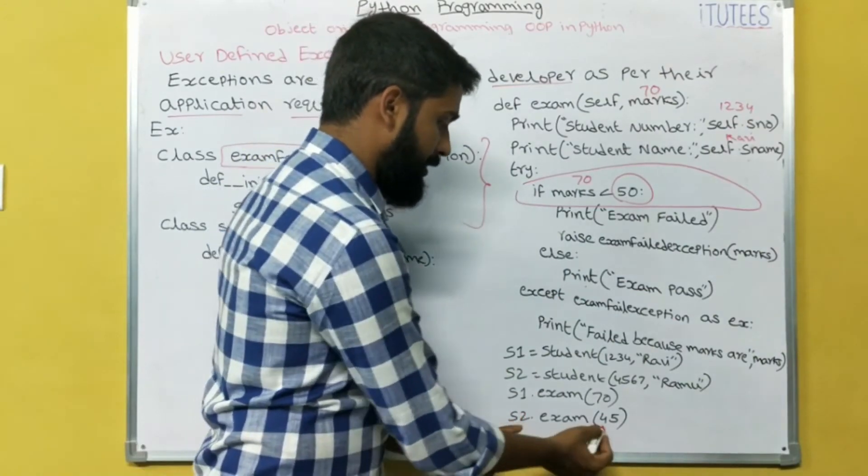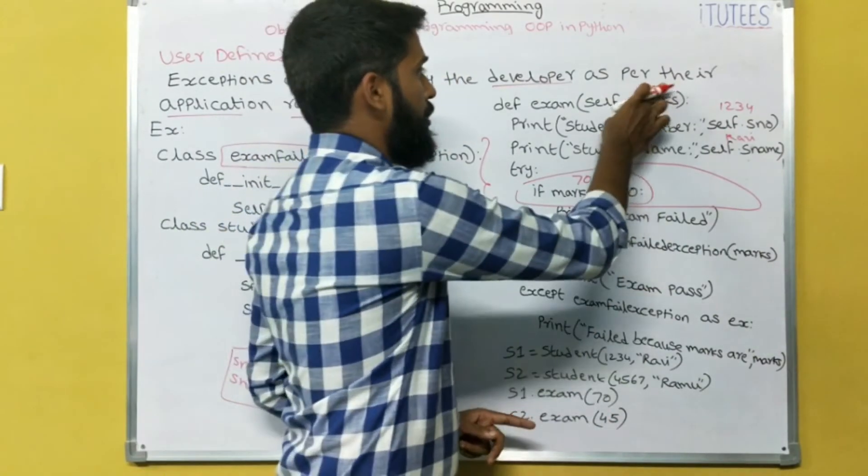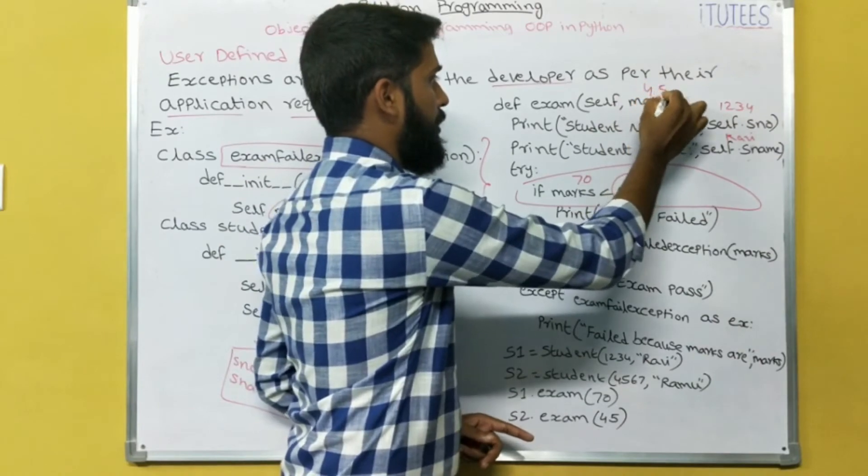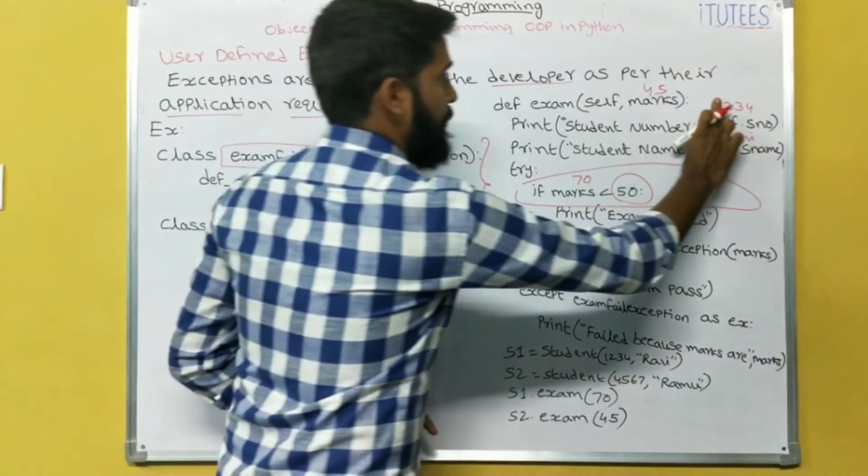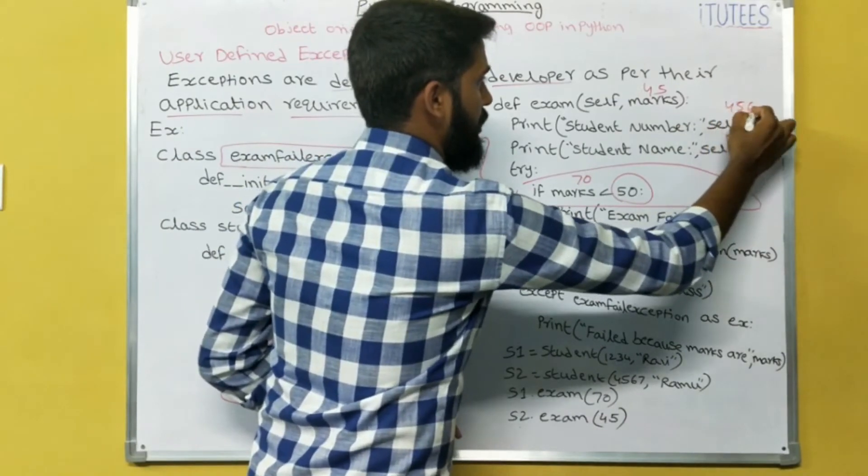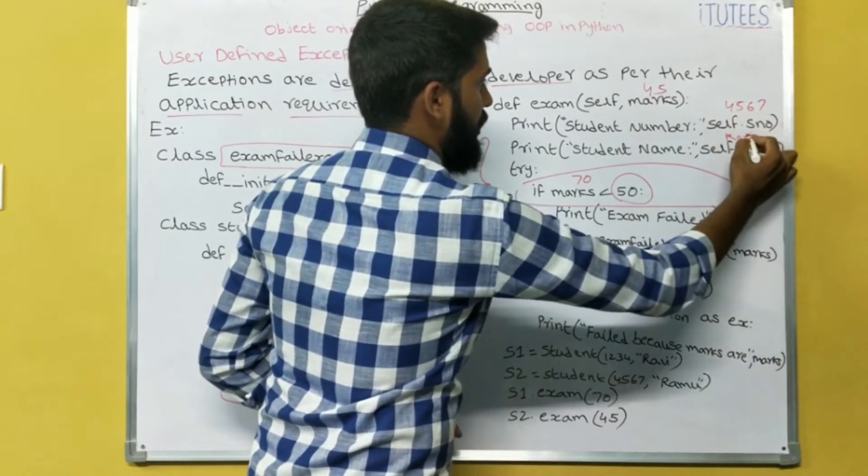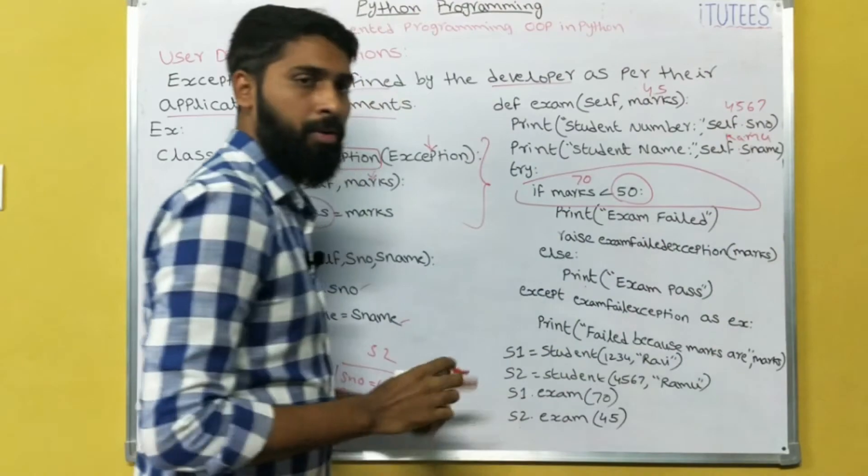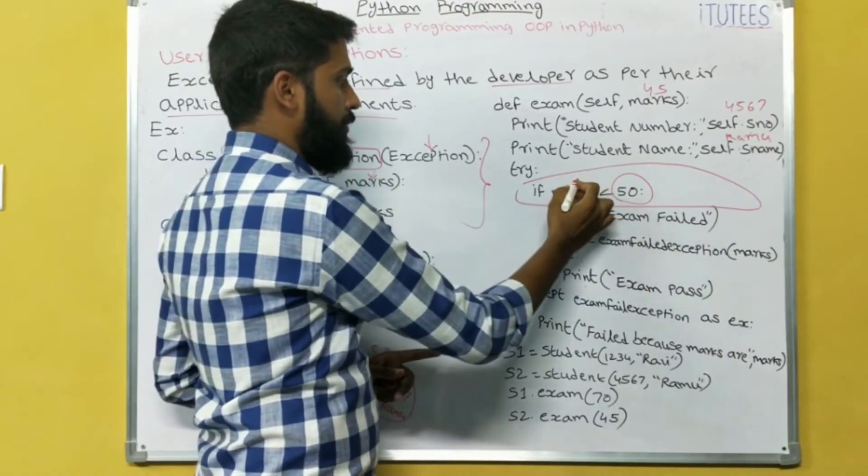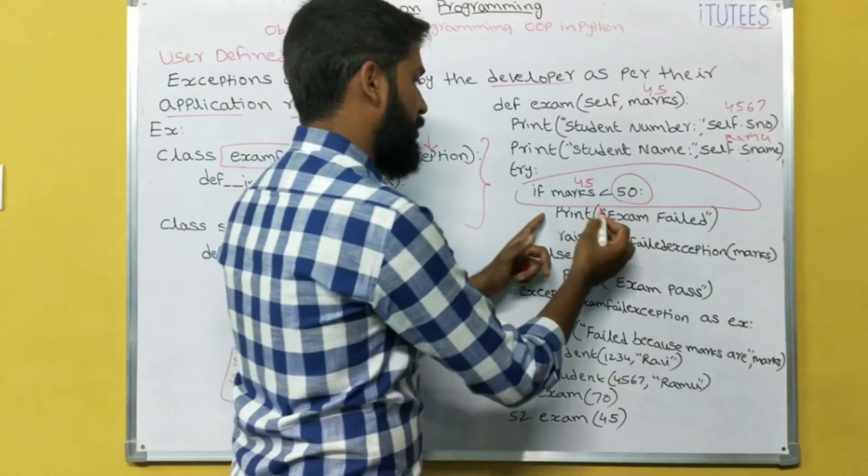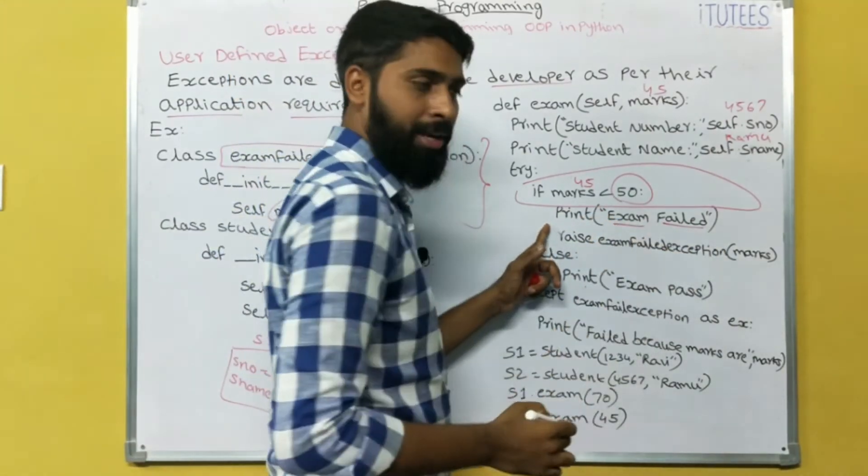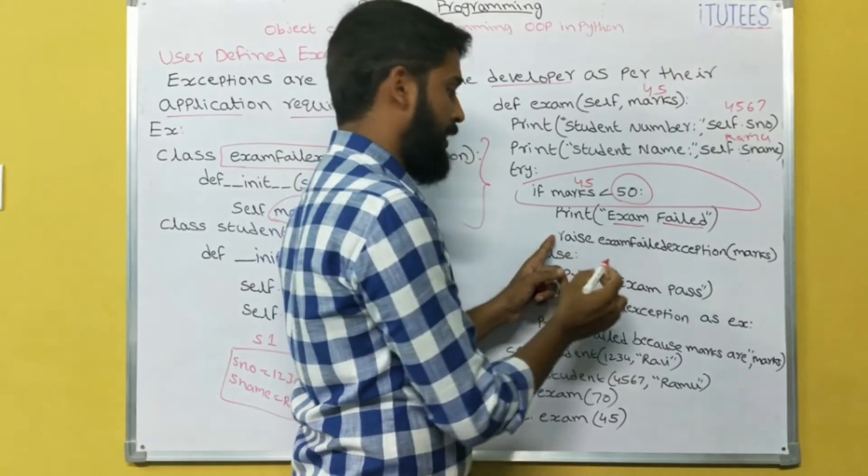When I am going S2.exam(45), now the marks are 45. Student number is S2, 4567, it prints 4567 and the name is Ramu. Now here, 45 less than 50? Yes, it is true. It prints exam fail and it raise the exception.